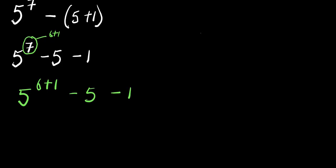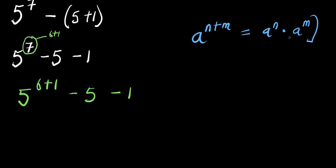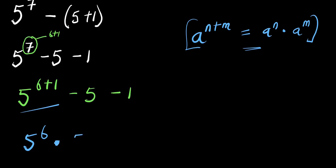Now, if you have a to the power of n plus n, this equals a to the power of n times a to the power of n. We are going to apply this identity, which means we have 5 to the power of 6 times 5 to the power of 1, minus 5, minus 1.